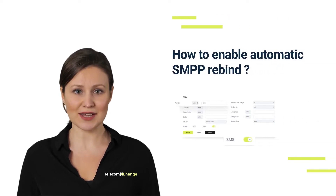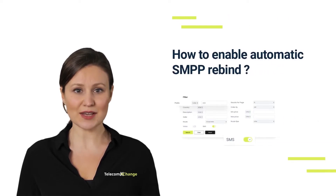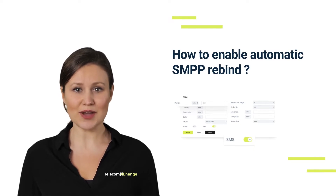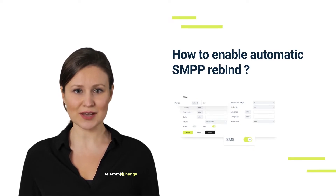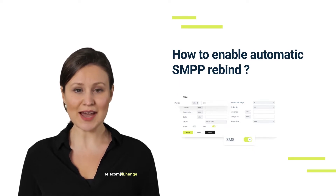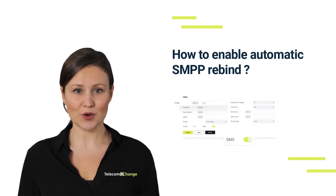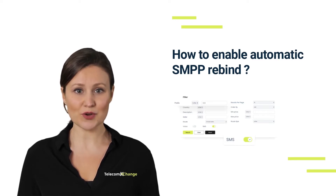Hi there, it's Mia from TCXC. In this video I will explain to you how to enable automatic SMPP rebind for your seller account. This feature enables SMS root providers to configure automatic bind recovery towards their SMPP binds if it fails for whatever reason. It can be configured in the seller's self-service portal.